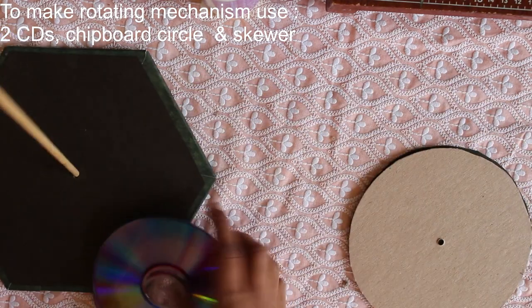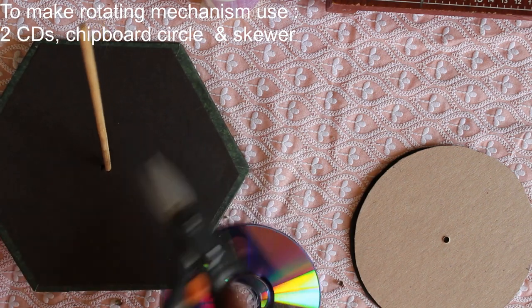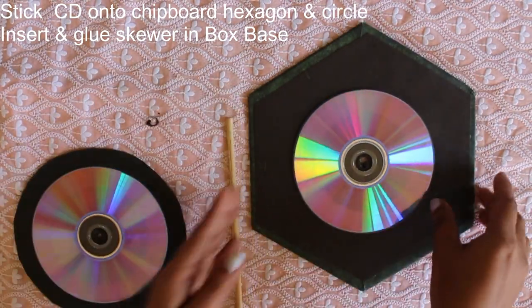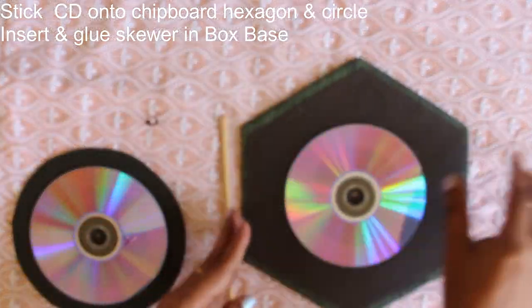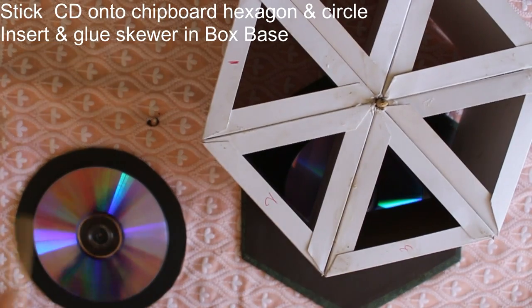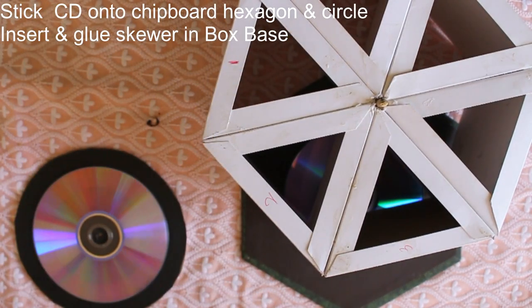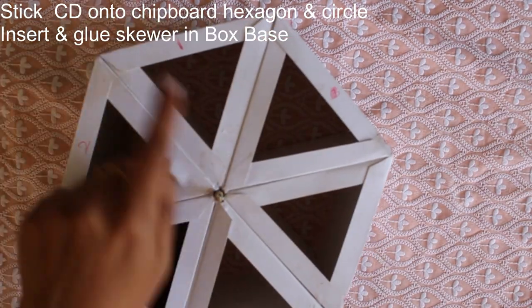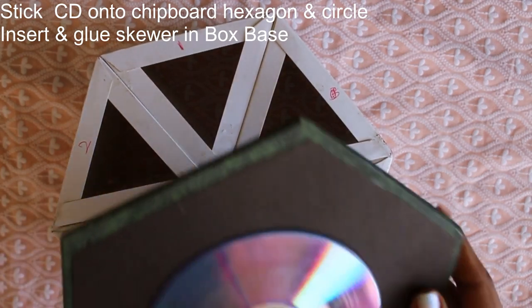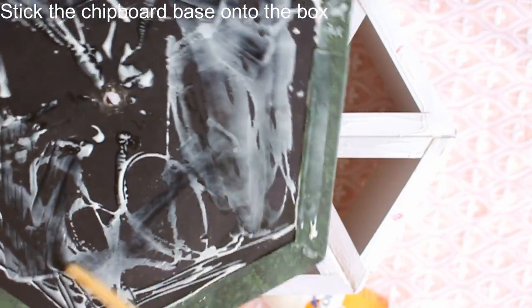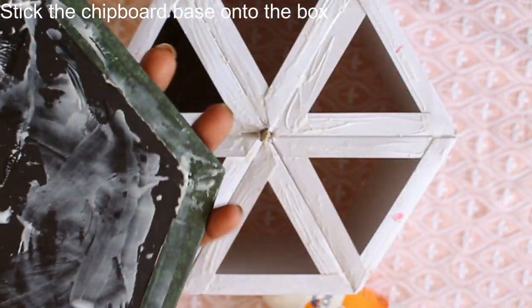So you need 2 CDs and a circle of chipboard with cardstock and a skewer to form your rotating mechanism. Stick the CDs on a circle that is the circle of chipboard and the hexagonal chipboard base you have already made. The skewer will be inserted onto your hexagonal box. The length of skewer you need will depend on the thickness of your hexagonal chipboard base and your circular chipboard. So align the chipboard and stick this chipboard hexagon onto your hexagonal box.